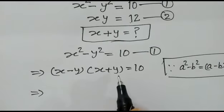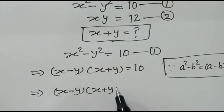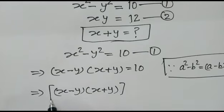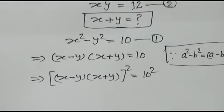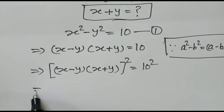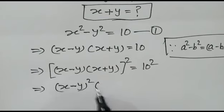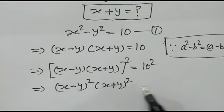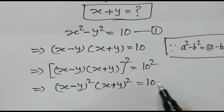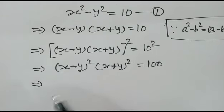Now squaring both sides, (x minus y)(x plus y) whole squared equals 10 squared, which gives (x minus y) squared times (x plus y) squared equals 100.